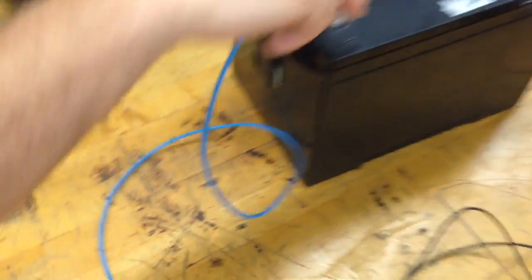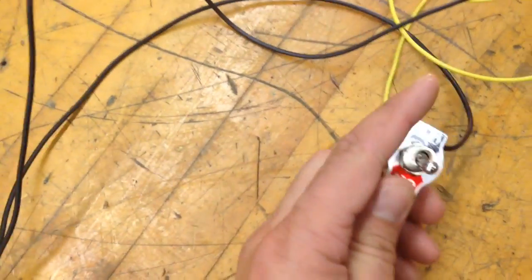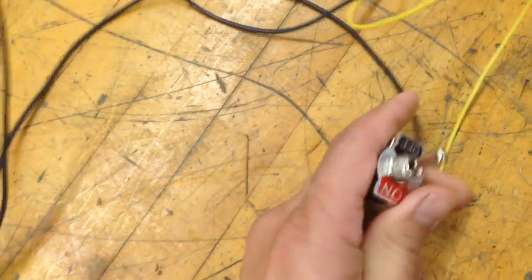So what you want to do is go through and verify each connection is solid, and then you'll be able to test the switch. Now the switch is on the off position.